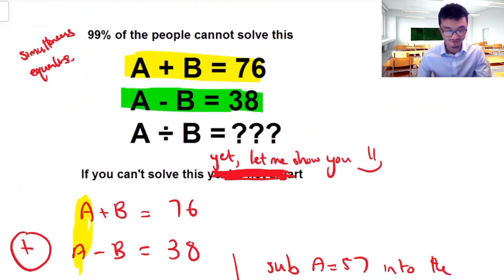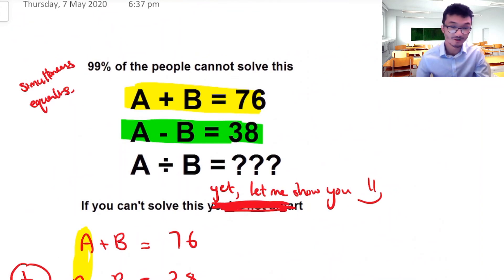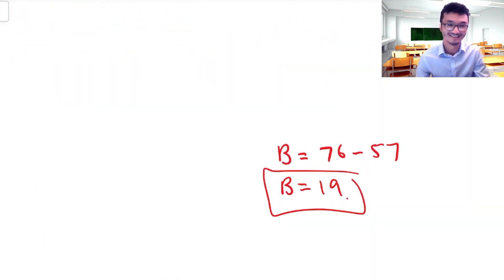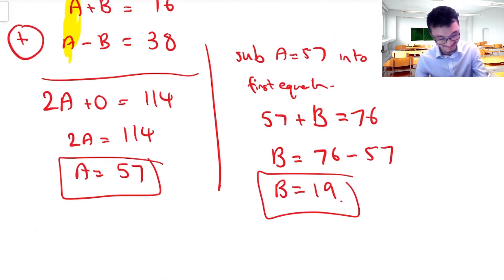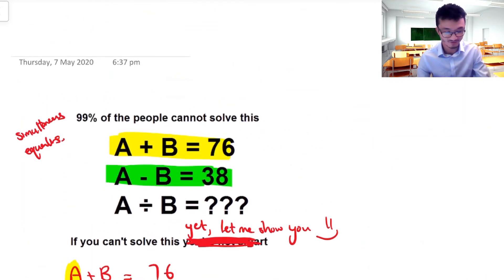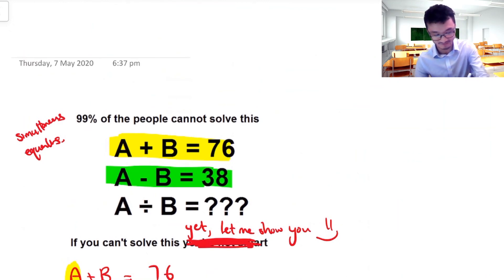So once you've got those, then we have to finish the last part of the problem. What's A divided by B going to be? I did it again, A divided by B. And so that's just 57 divided by 19. And that's going to give me 3. So that's how you can work this one out. This is just 3.